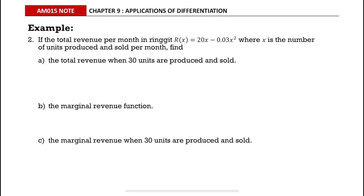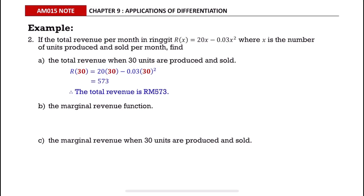For Example 2, the total revenue per month in Ringgit is R(x) = 20x - 0.03x², where x is the number of units produced and sold per month. Find the total revenue when 30 units are produced and sold. The total revenue is obtained by substituting 30 into the revenue function, and it equals 573. So the total revenue is RM 573.